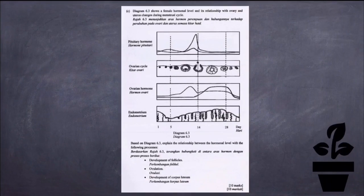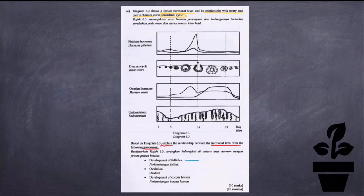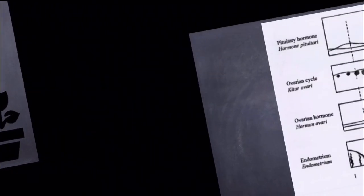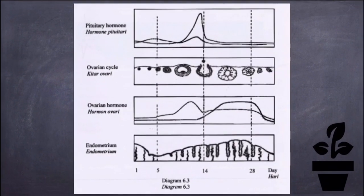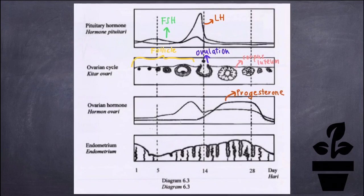For the last question, diagram 6.3 shows a female hormone level and its relationship with the ovary and uterus during the menstrual cycle. Based on diagram 6.3, explain the relationship between hormone levels and the following processes: development of follicle, ovulation, and development of corpus luteum. We need to understand and identify the hormones involved in the diagram and relate the four different graphs shown.